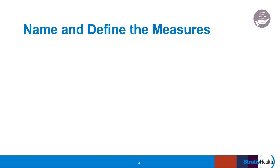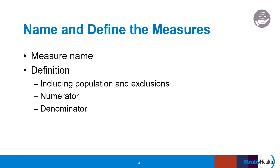To get started, you'll need to name and define the measure you'll be tracking. Measure name is relatively straightforward. However, you may want to consider including not only the formal name of the measure, but also how you refer to the measure internally in any state or federal identifiers. For example, the formal metric name might be controlling high blood pressure, which has a corresponding NQF and CMS identifier, and the team might refer to it as the hypertension measure. You'll need to clearly define the measure, pulling from the data specifications if they exist, include the population of interest and any exclusions, and also define the numerator and denominator.